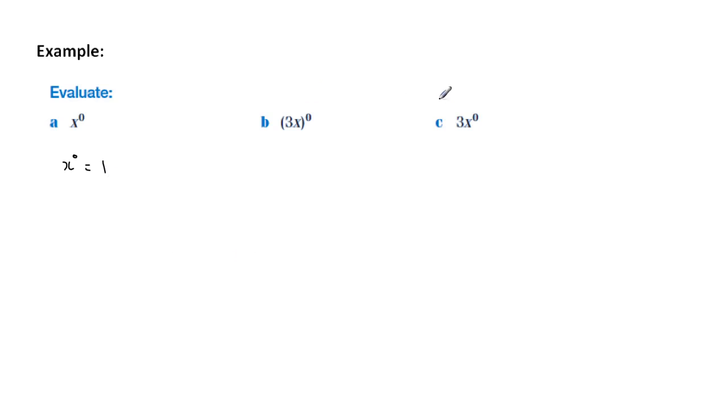Now we've got these two expressions here that look almost the same except for the brackets, and it's very important that we actually see what the difference is. This one here means that everything inside the bracket is to the power of zero, so it's both three and x to the power of zero. So one way to look at it would be to say well let's write it out again: three x to the zero. Let's expand this inside, three times x to the zero.